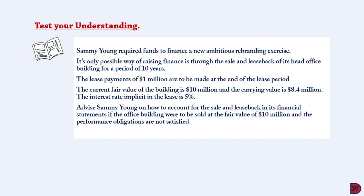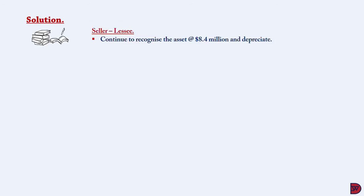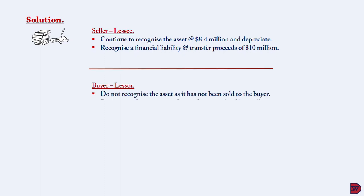In this scenario we have been given a caveat that the performance obligations are not qualified to be recognized as a sale with respect to IFRS 15. With the solution: the seller-lessee will continue to recognize the asset at $8.4 million and depreciate it as usual. A financial liability is recognized at the transfer proceeds of $10 million. The buyer-lessor does not recognize the asset in its books but instead recognizes a financial asset at the transfer proceeds of $10 million.